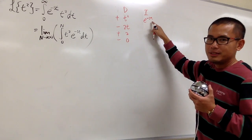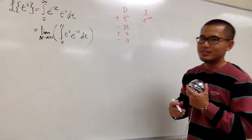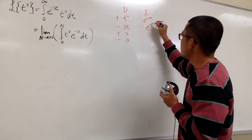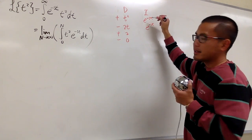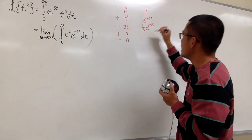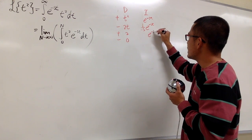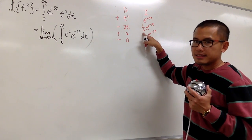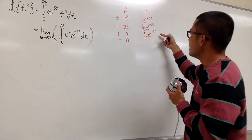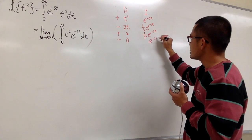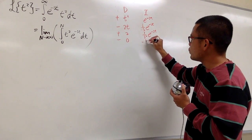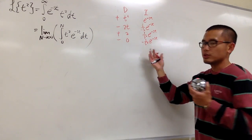To integrate e to the negative st, we divide by negative s each time. So the I column gives us: e to the negative st over negative s, which is the same as 1 over negative s times e to the negative st. Do it again: e to the negative st divided by negative s again, giving positive 1 over s squared times e to the negative st. Do it again: e to the negative st divided by negative s again, giving negative 1 over s cubed times e to the negative st.